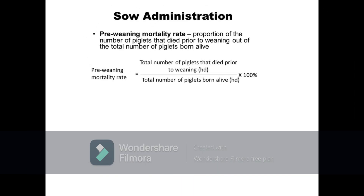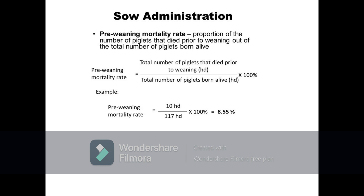Next parameter is the percent pre-weaning mortality. This refers to the proportion of piglets that died prior to weaning out of the total number of piglets born alive. It is calculated as total number of piglets died before weaning divided by the total number of piglets born alive, multiplied by 100%. For example, if there are 117 piglets born alive and 10 of these piglets died prior to weaning, percent pre-weaning mortality is calculated as 10 divided by 117, multiplied by 100%, equals 8.55%.